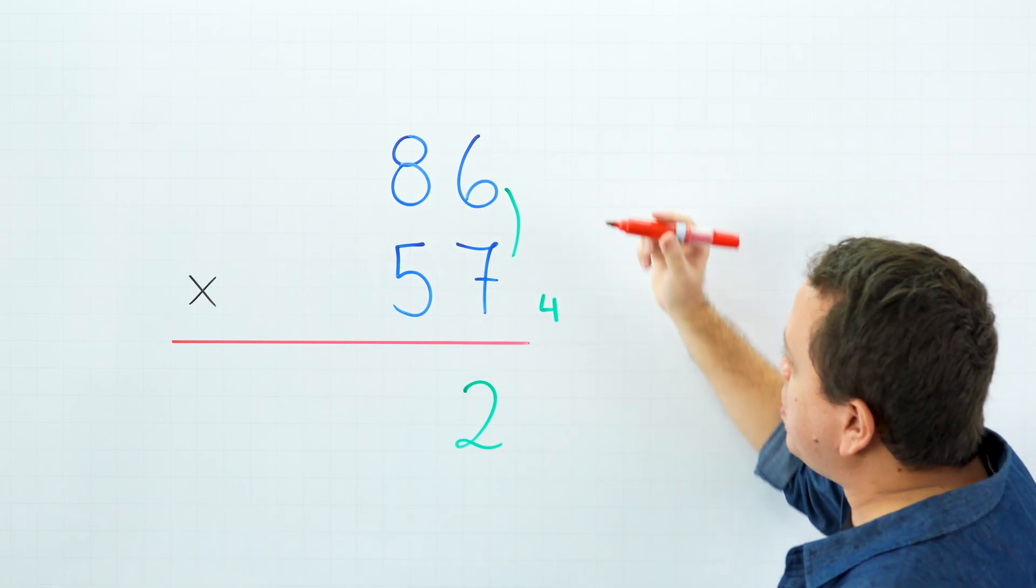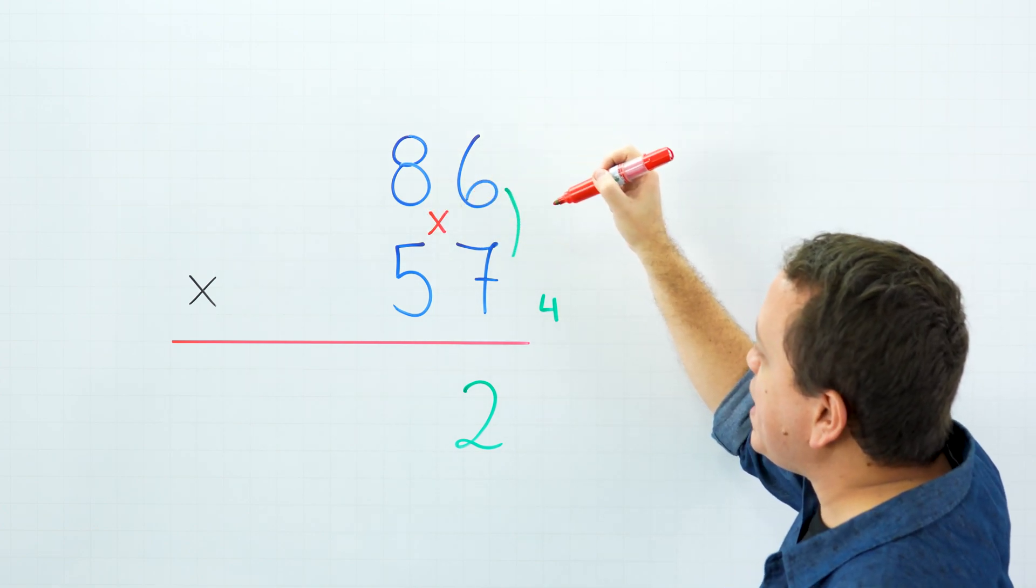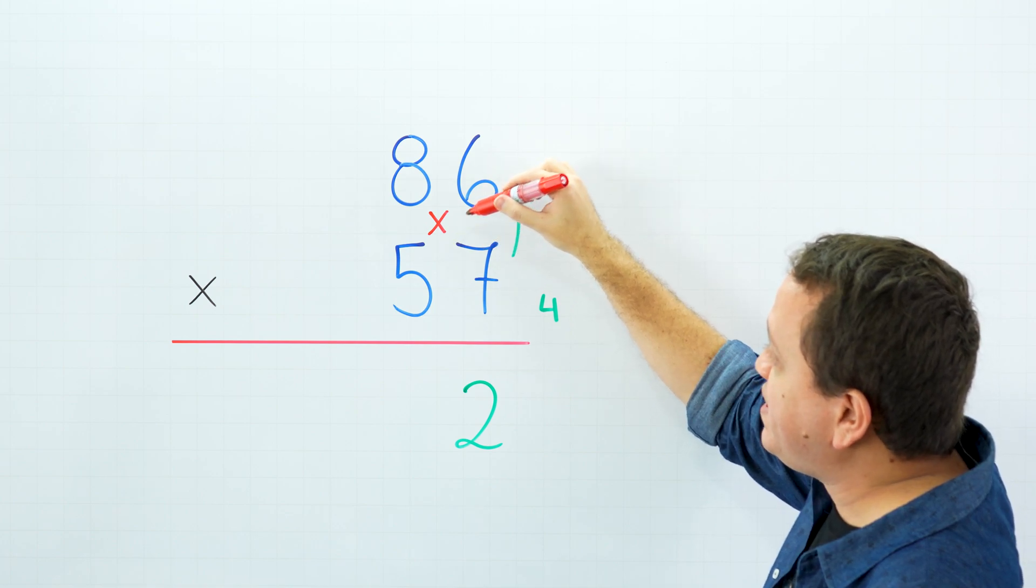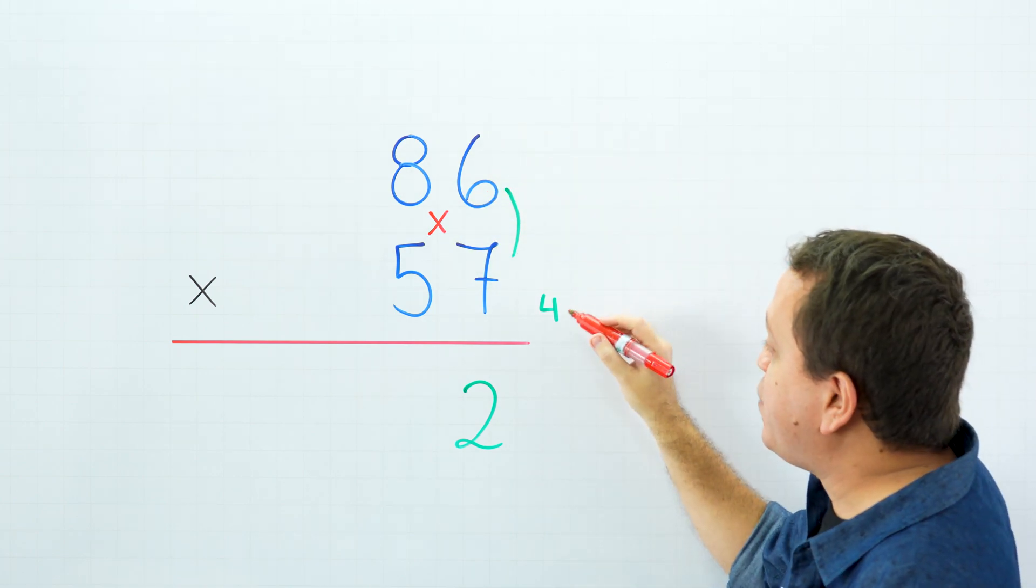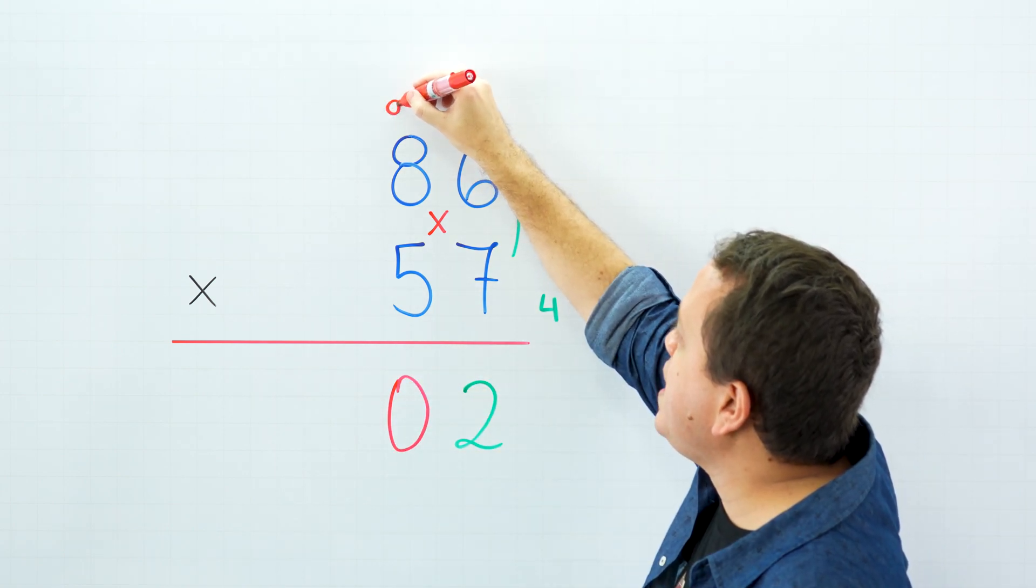Then, we need to cross-multiply. 8 times 7 is 56, and 5 times 6 is 80. 56 plus 80 is 86, plus 4 that we carry over gives us 90. I'm going to write the 0 and carry the 9.